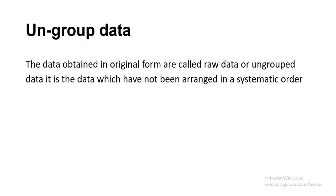If we have a large number of observations — in hundreds or thousands — dealing with ungrouped data is very difficult because it is not arranged in any order. Finding specific information becomes hard, and sometimes observations can be missed. Ungrouped data is simply the original or raw form of data.